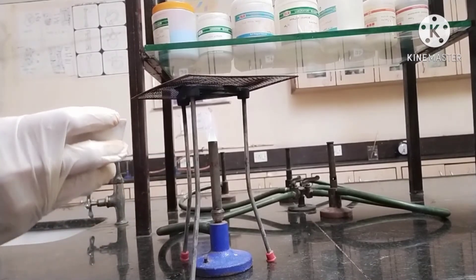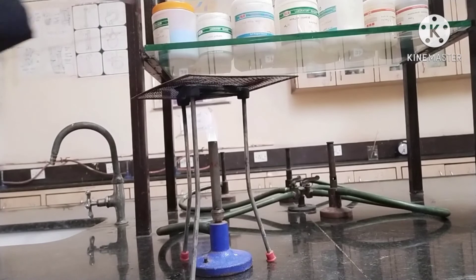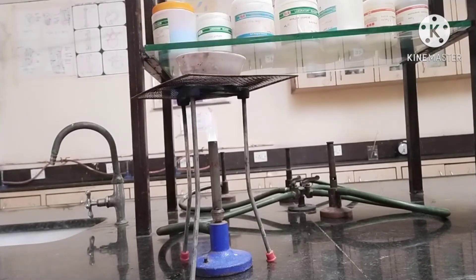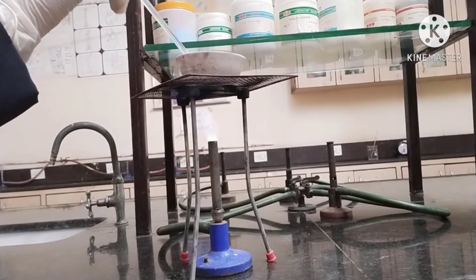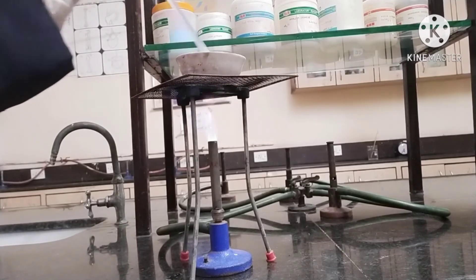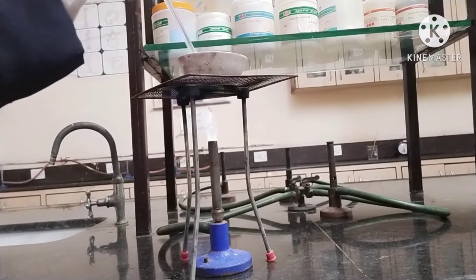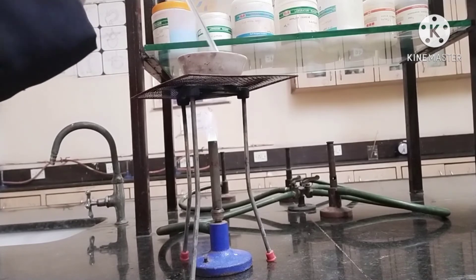Now heat this solution in a china dish over the burner and stir the solution continuously with the help of a glass rod until the volume of solution reduces to about one and a half times its original volume, like this.